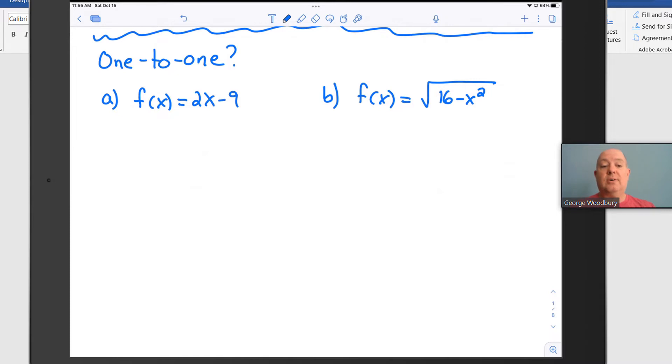we have f(x) = 2x - 9, and one thing that we can try is to start with f(a) = f(b) for some values of a and b that we're hoping are different from each other. Plug in a to the function, and we get 2a - 9. Plug in b, and we get 2b - 9.